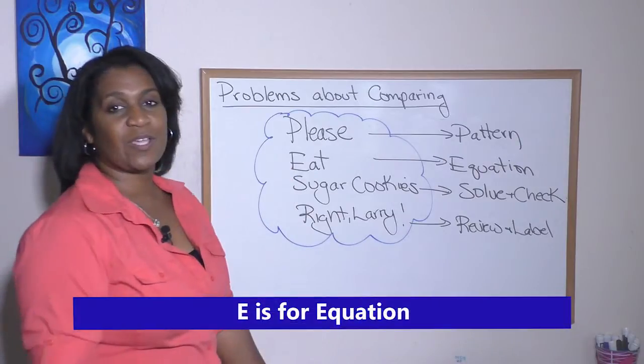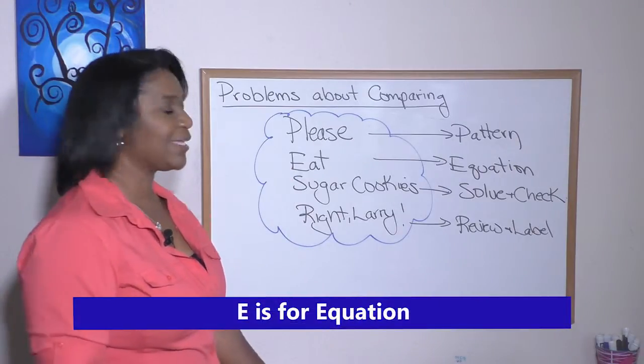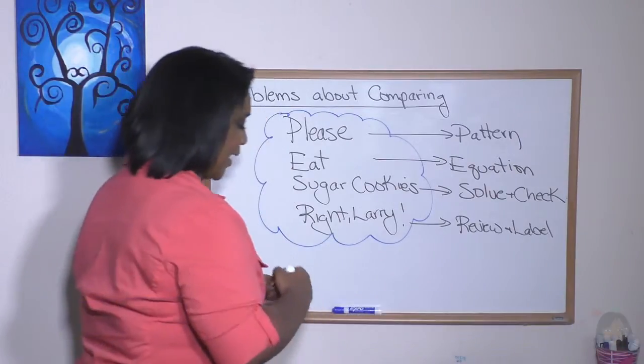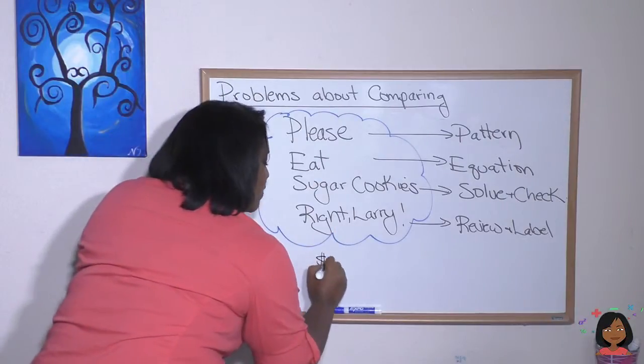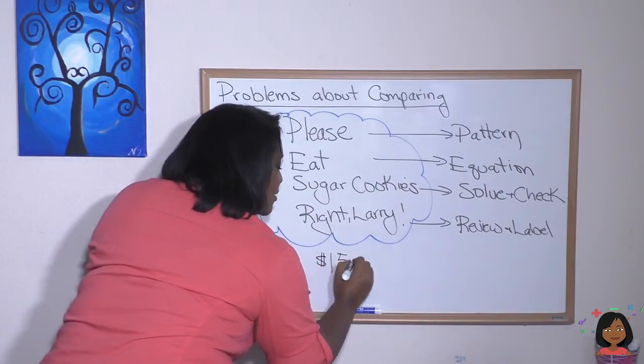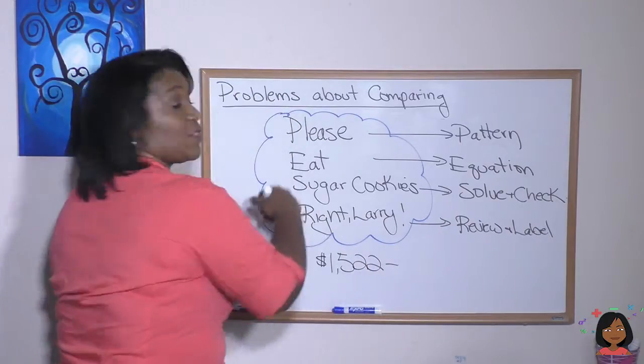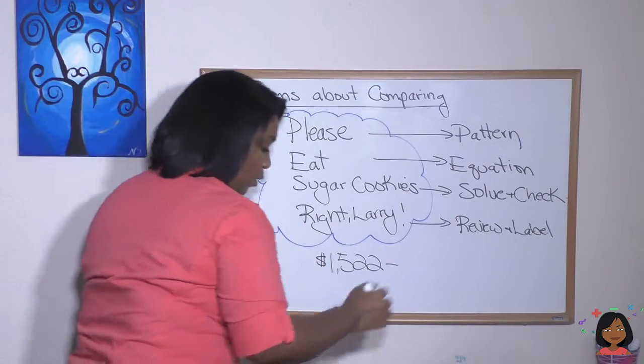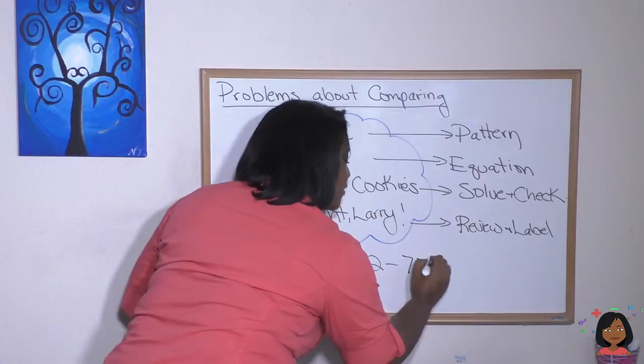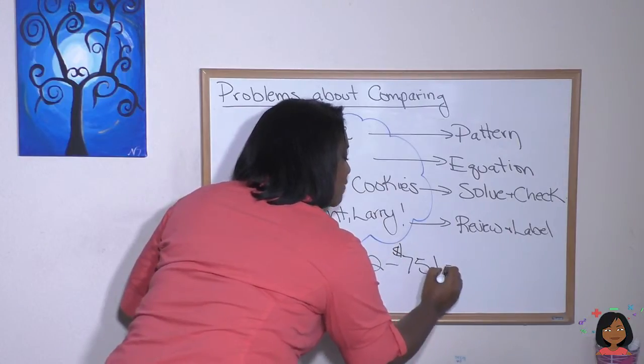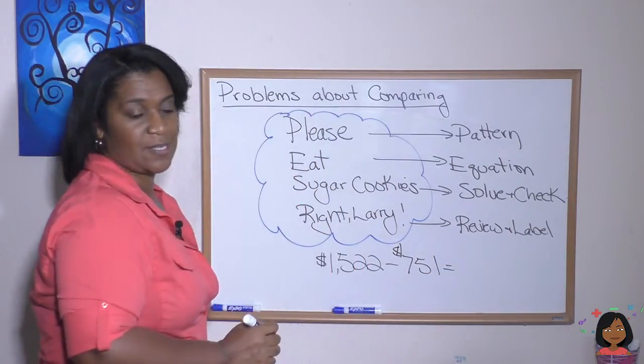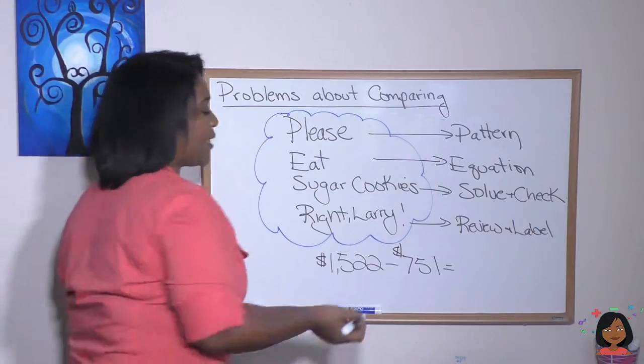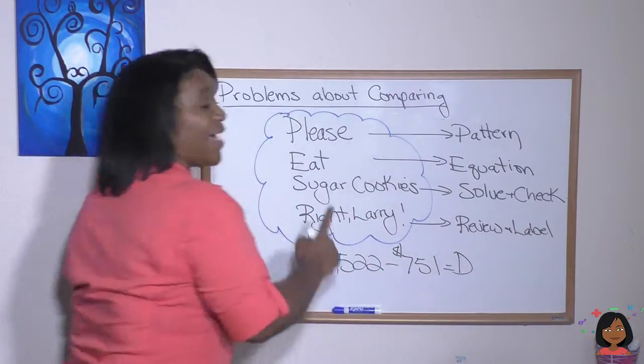Okay, let's do E is for equation. Let's write the equation. So the amount that Emily sold was $1,522 and the smaller amount that Emily sold was $751. And we want to find out what the difference is but we don't know what that is, so I'm just going to write D for difference. That's my equation.